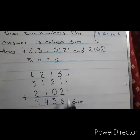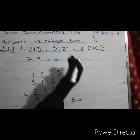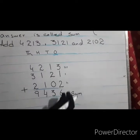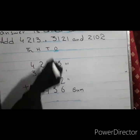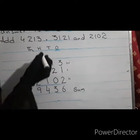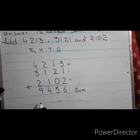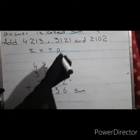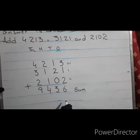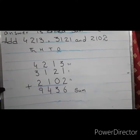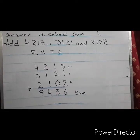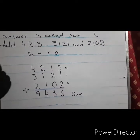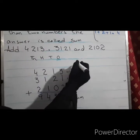We start addition from our right side, from the ones values. We add ones, then tens, then hundreds, then thousands. This is the vertical method of addition. Clear, students? Vertical method of addition.